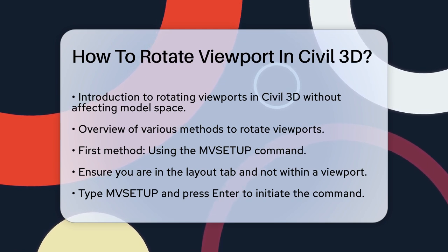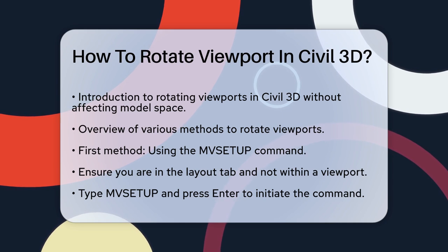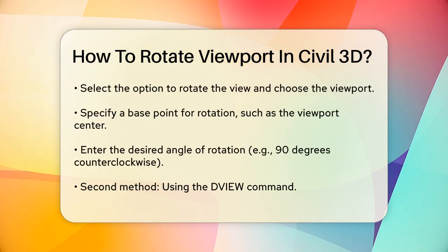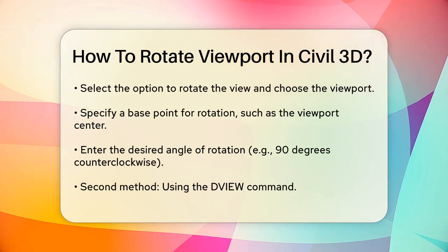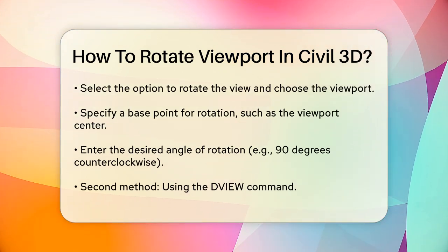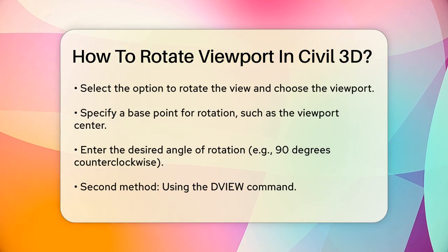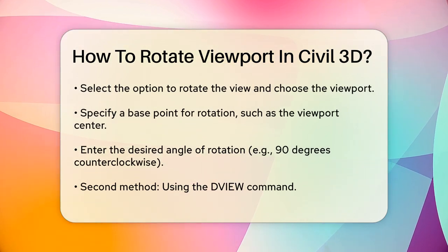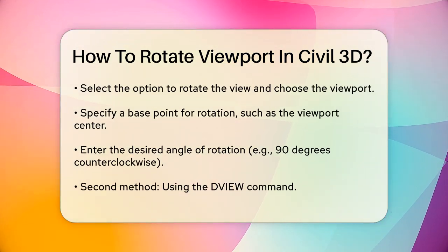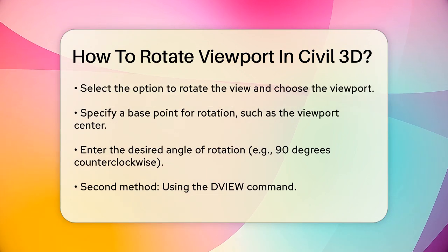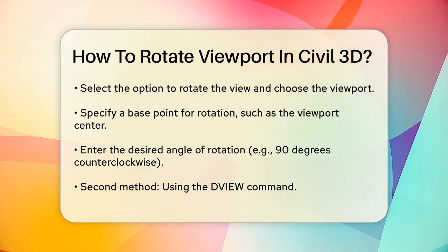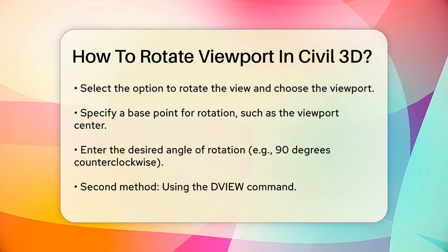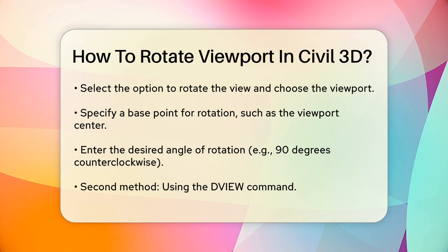Once you're in the MV Setup command, you'll be prompted to choose what you'd like to do. Select the option to rotate the view, and then choose the viewport you want to rotate. You'll need to specify a base point for the rotation, which can be any point on your drawing, such as the center of your viewport. Then enter the angle of rotation you need. For example, if you want to rotate the viewport 90 degrees counterclockwise, you would enter 90.